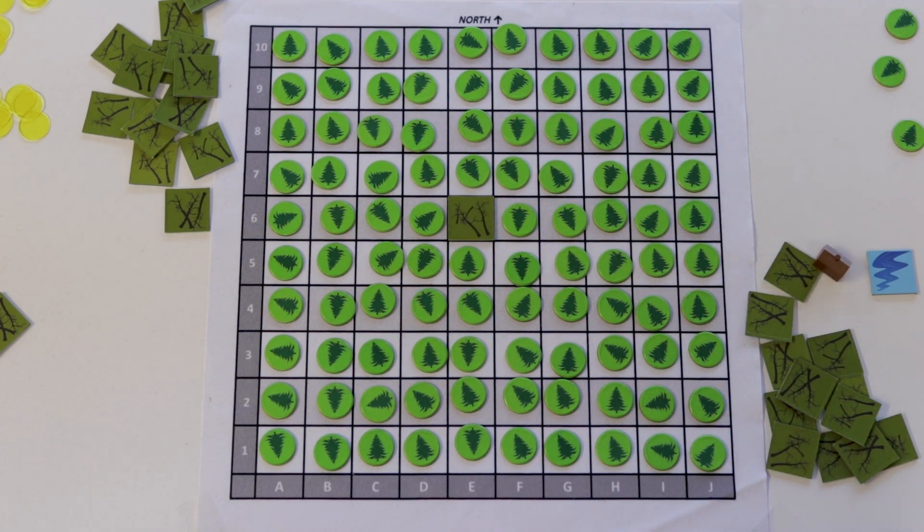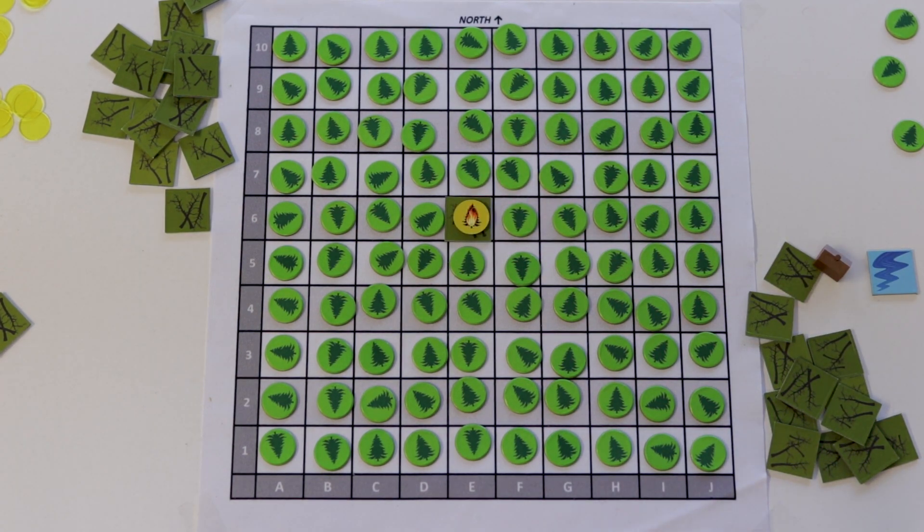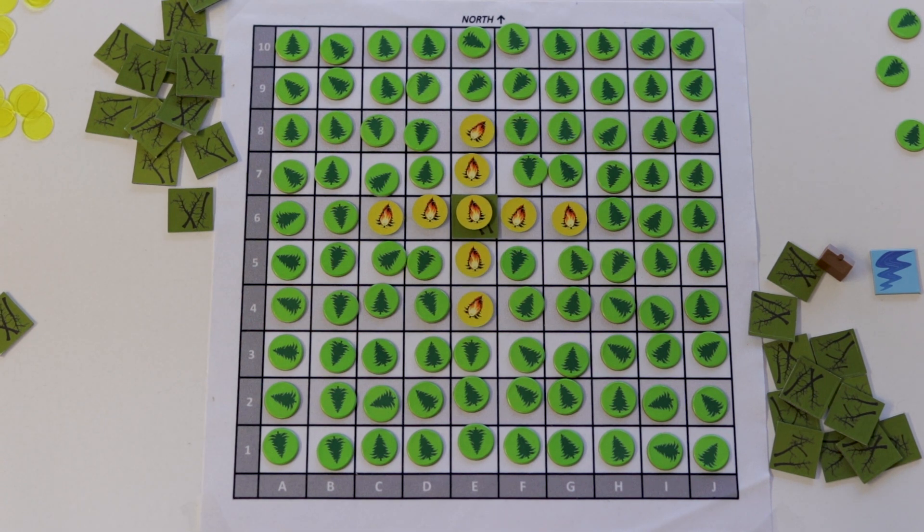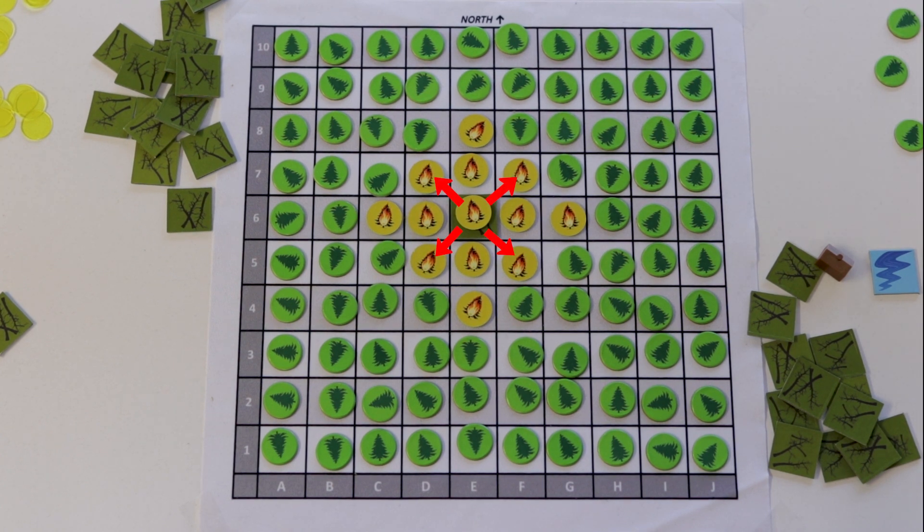Once a square of dead wood catches on fire, it spreads farther horizontally and vertically than normal. Two squares instead of one. It still only burns one square in the diagonal direction.